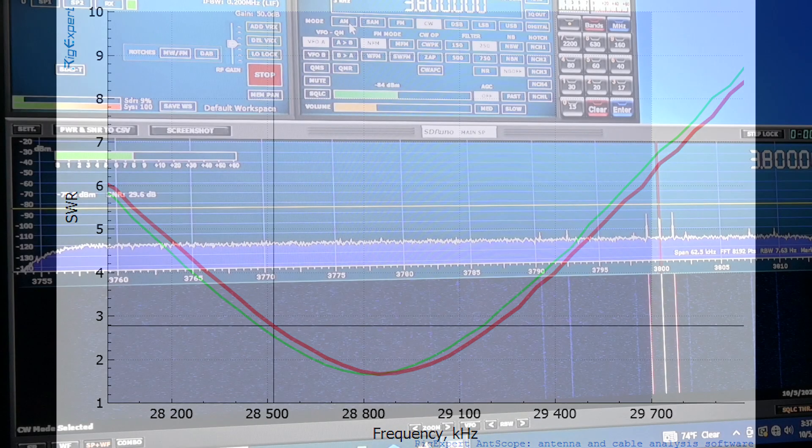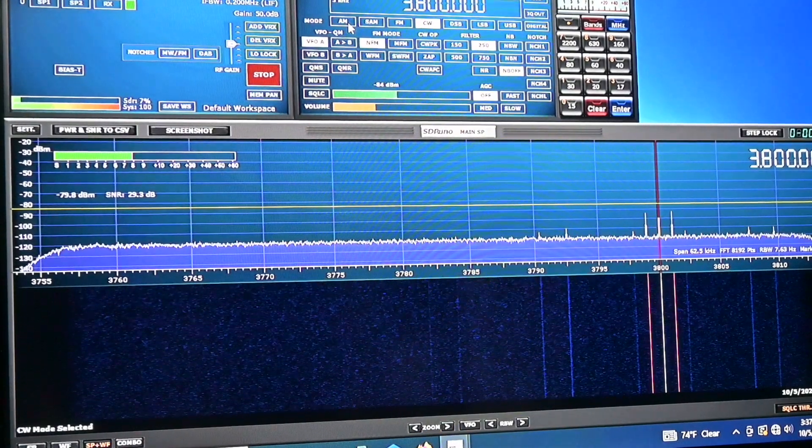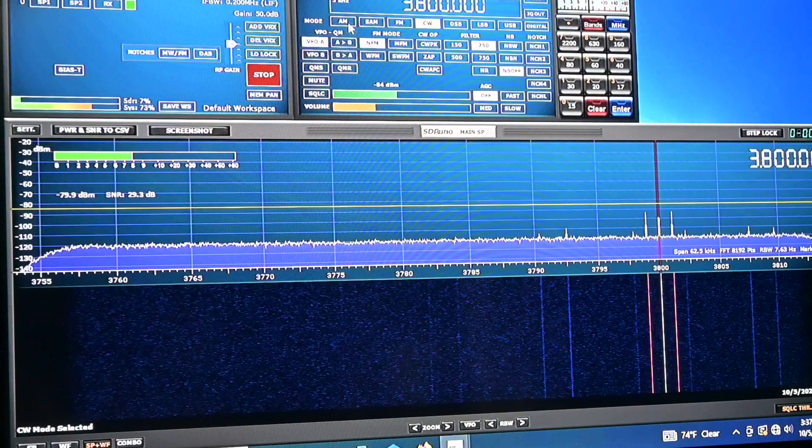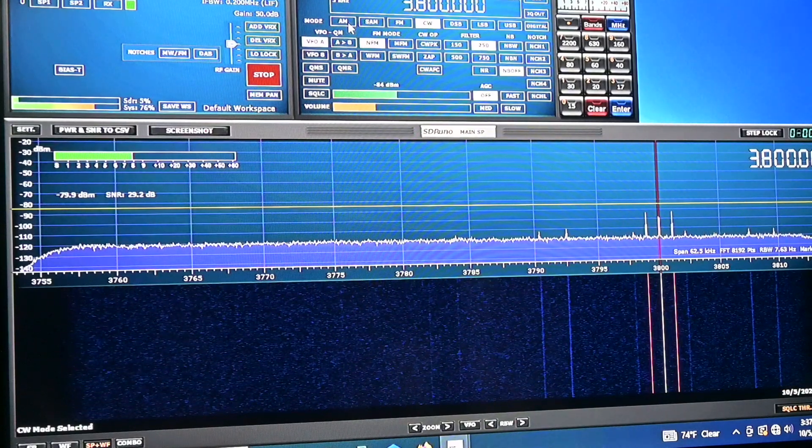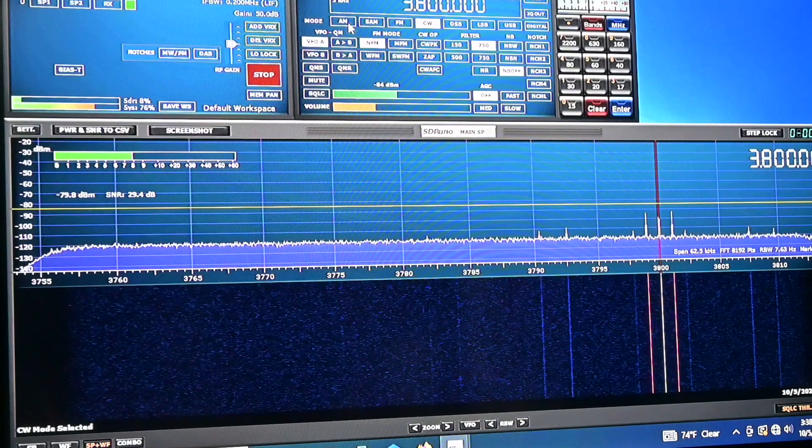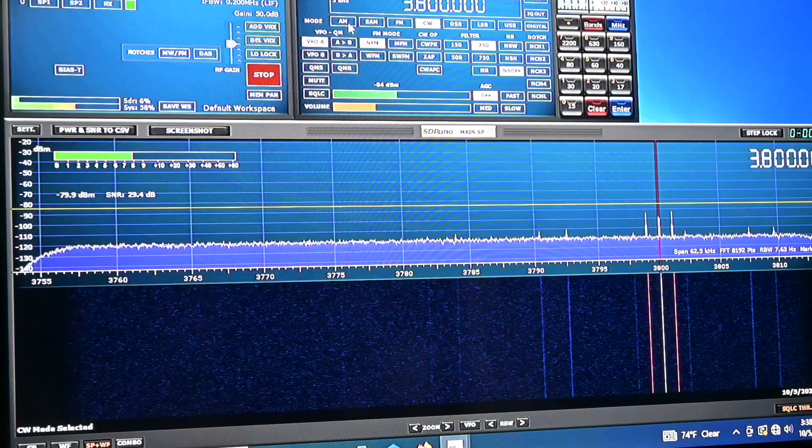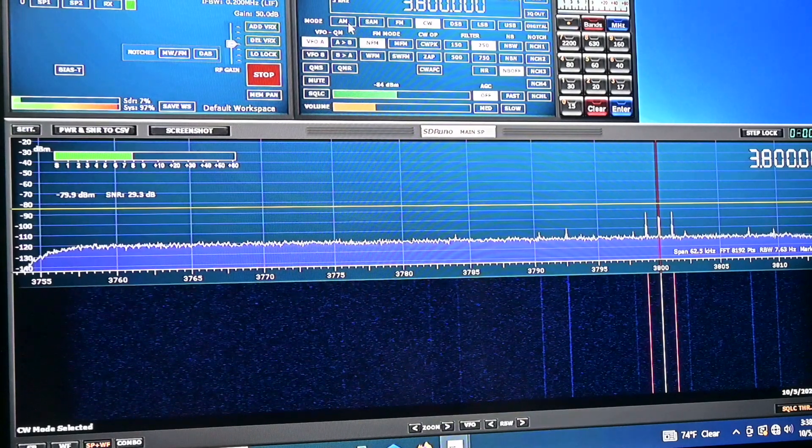Let's do a little experiment. This is a signal that's being received by the ZS6BKW at 3.8 megahertz and this is without the capacitor and the received signal strength is minus 79.9 decibel milliwatts.